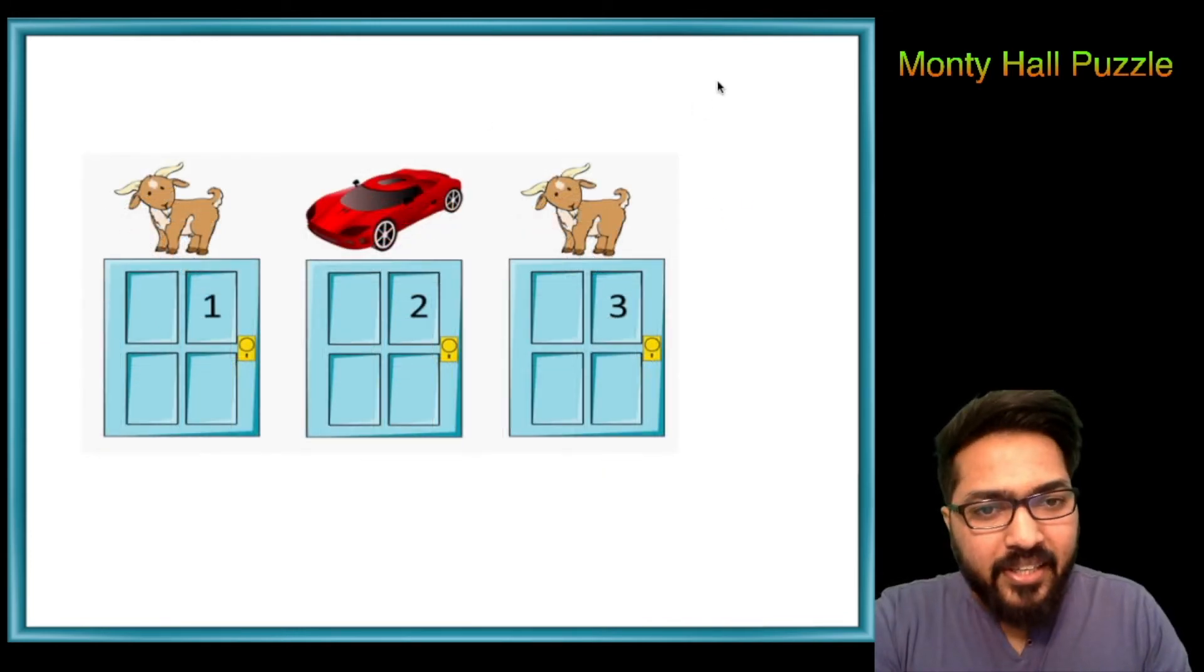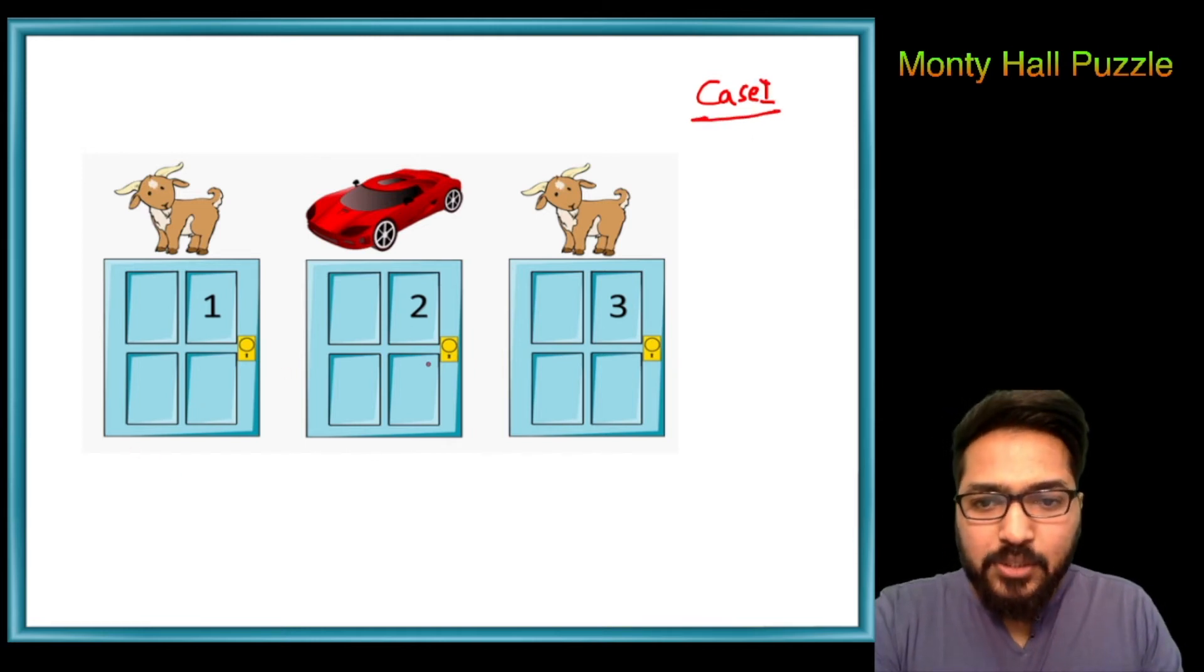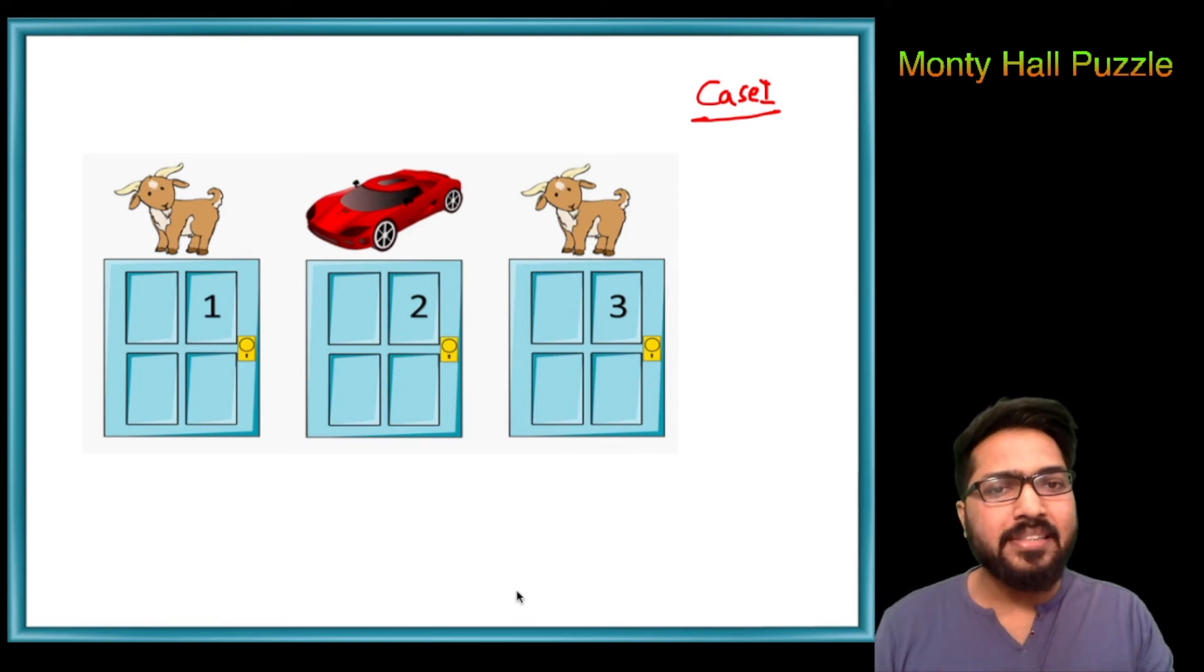Let's make three cases. In case one, my contestant is going to choose door one. In case two, my contestant is going to choose door two. In case three, the contestant is going to choose door three. We can take this same example only, because obviously the contestant does not know this.